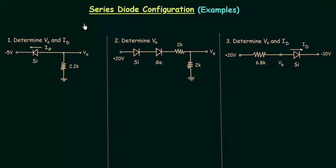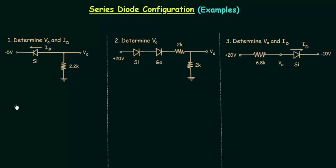In this lecture I will solve examples based on series diode configuration. In the first example we need to determine V0 and Id. V0 is the potential at this point, and when you complete this circuit you will find V0 is the voltage across this resistance. Id is the current flowing through the silicon diode, and minus 5 volt is the potential at this point. We can also redraw this circuit like this.